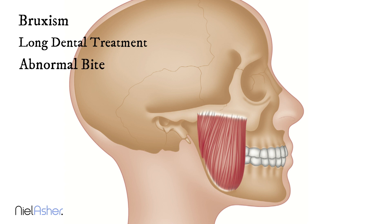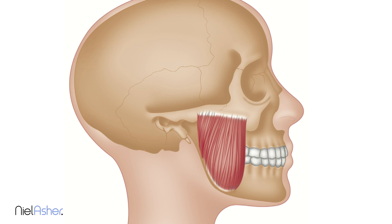Occlusal imbalance — meaning that as you bite, the bite is not symmetrical or is abnormal — may also set trigger points off in the masseter muscle. However, there is great debate as to what constitutes a correct bite. Many people with quite unusual, crooked-looking bites have no problems, while others with good-looking bites have symptoms.